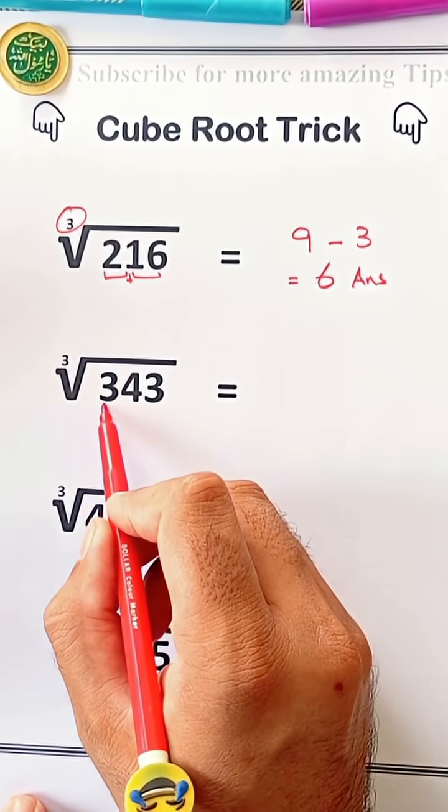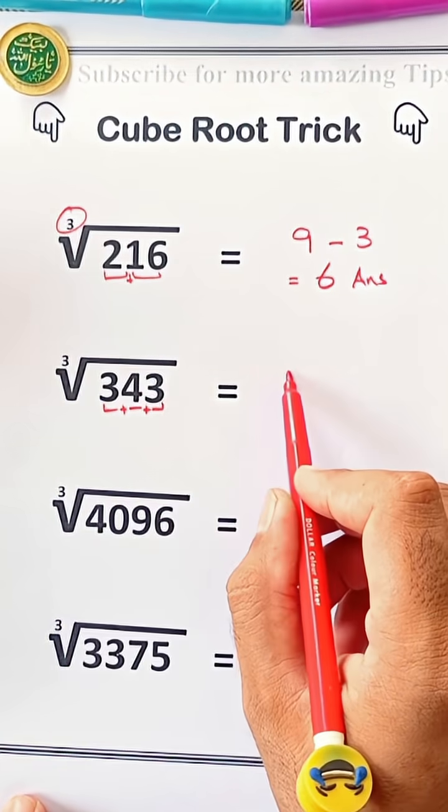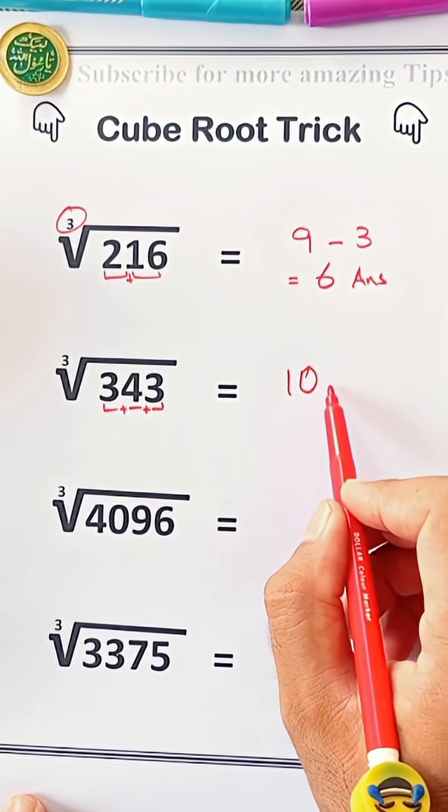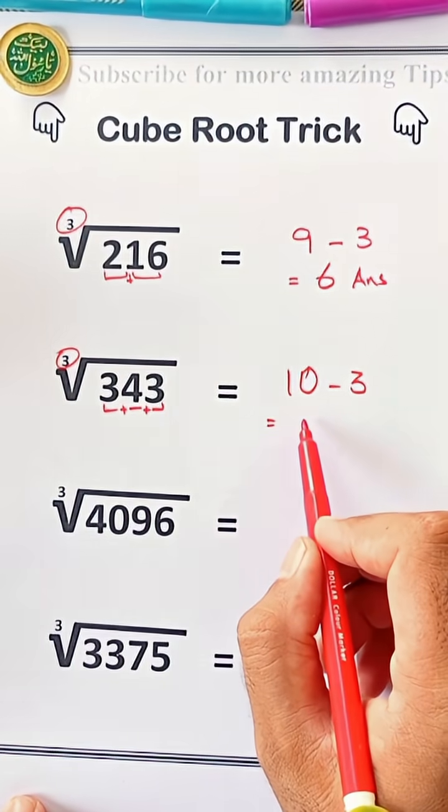Let's try another. 343. Add them up. 3 plus 4 plus 3 equals 10. Now subtract 3. 10 minus 3 equals 7.